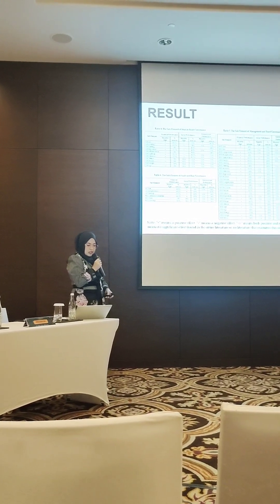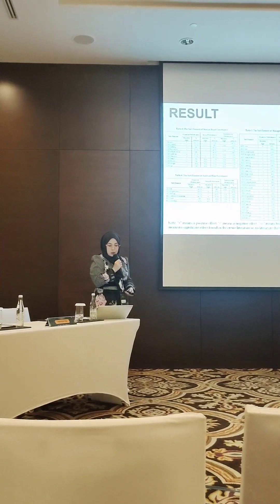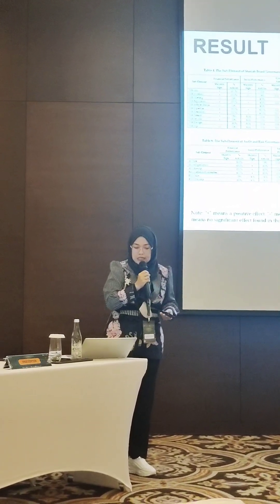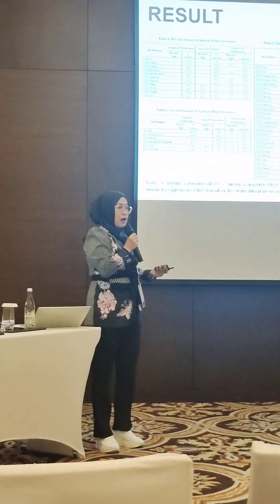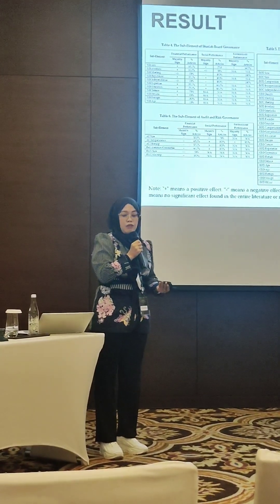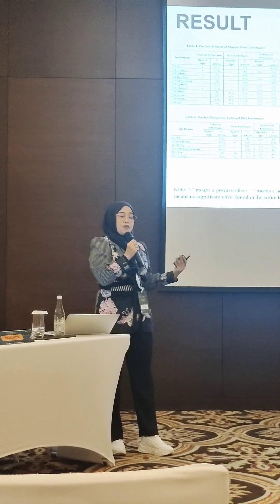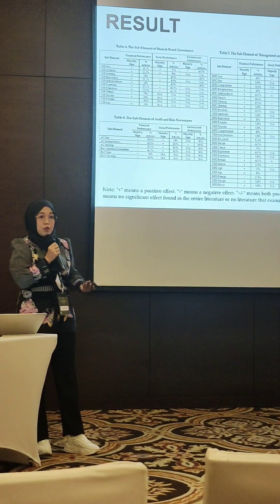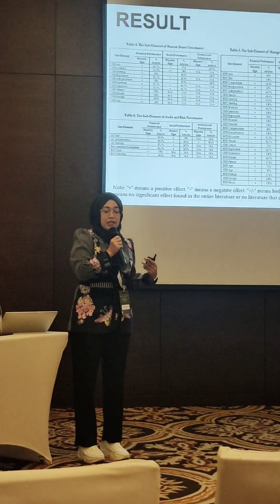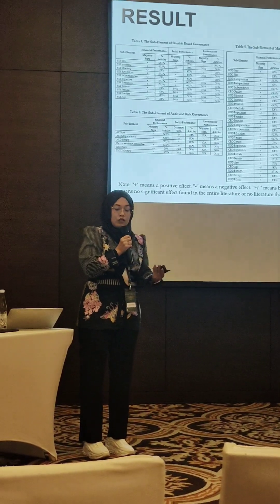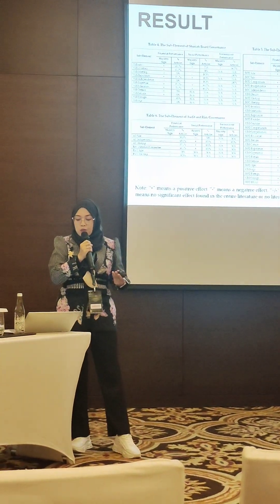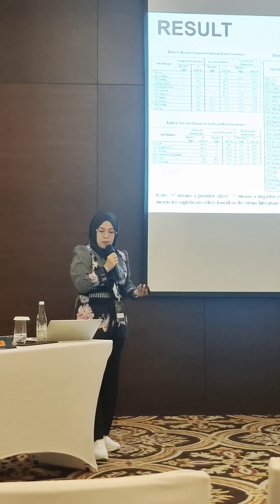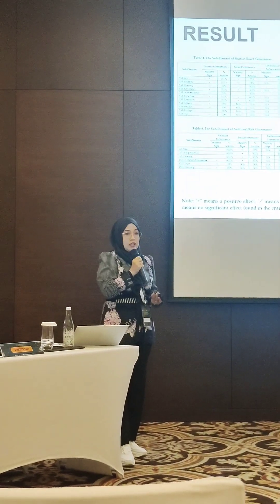For the content analysis result, which we used to answer research question one, we successfully identified more than 50 ICG elements that contribute to firm performance, and then classified them into five main elements based on their characteristics and function. This expands the classification from previous studies that only limited to two elements. For the first element — Sharia board governance — we use the same terminology as previous studies, consisting of the Sharia board and its characteristics and functions. But for the regular board governance elements, we classify them into two main elements: management and board governance elements, and audit and risk governance elements.